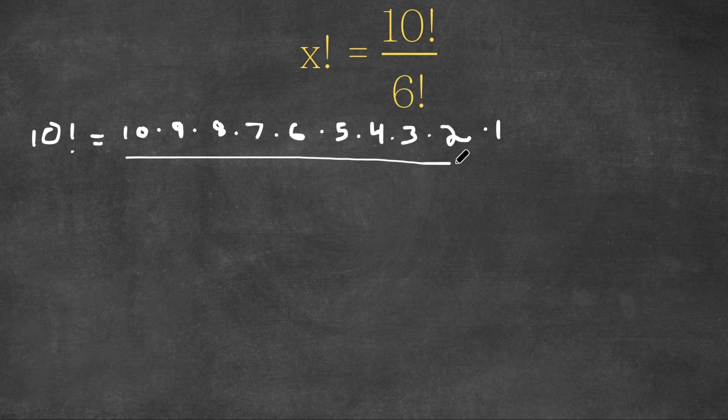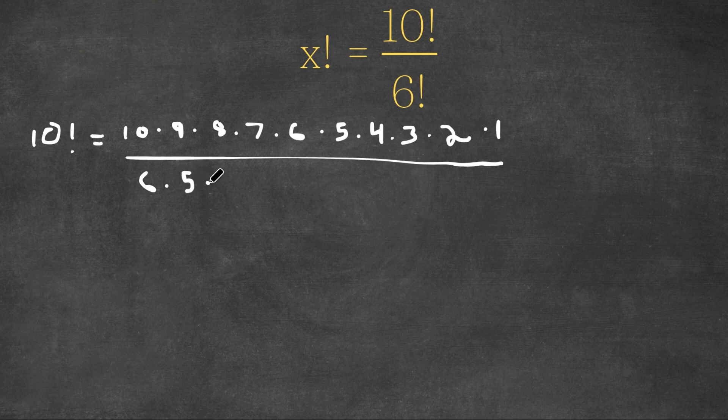We are dividing this by 6 factorial, which is equal to 6 times 5 times 4 times 3 times 2 times 1.